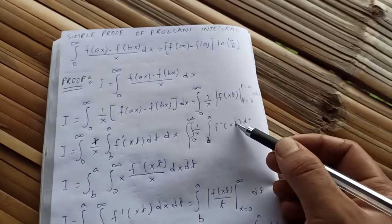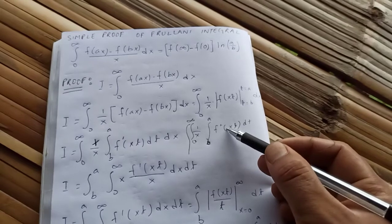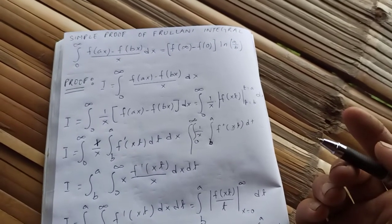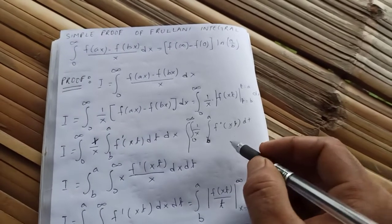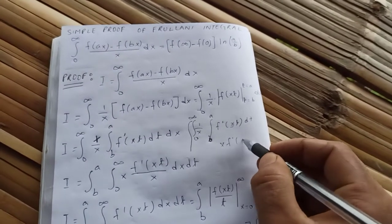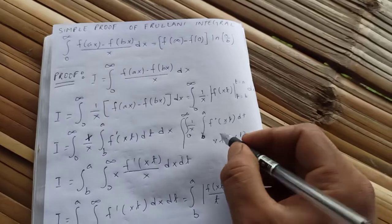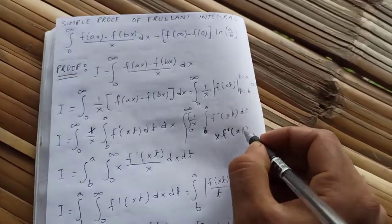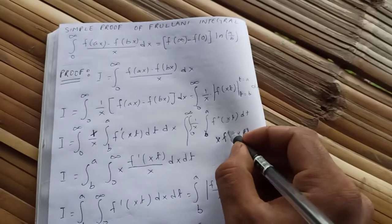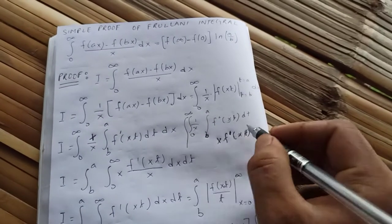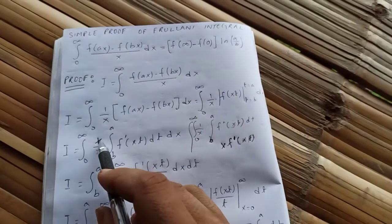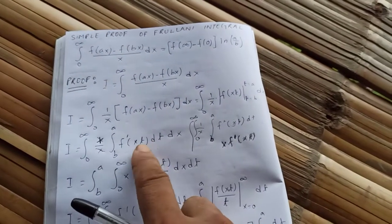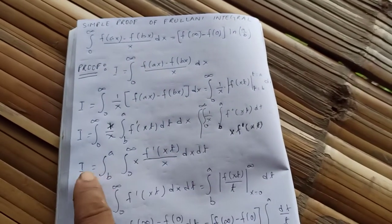Using the chain rule, differentiating f(xt) with respect to t gives x·f'(xt). So we have x·f'(xt) in the numerator, and combined with the 1/x, these two x's cancel.